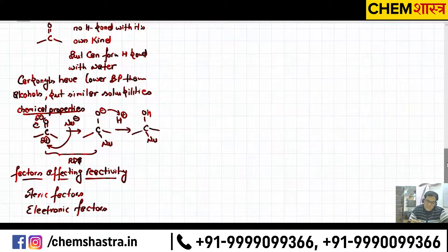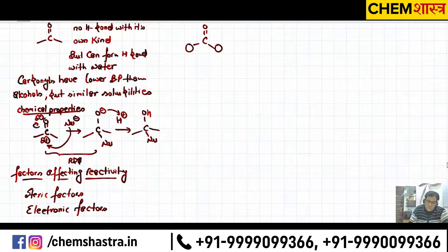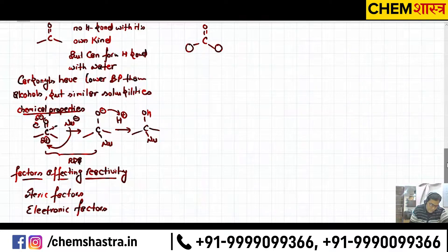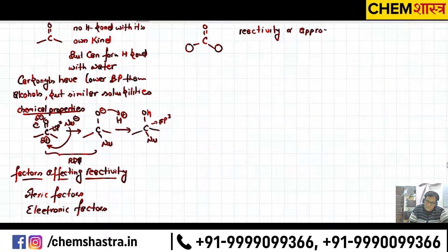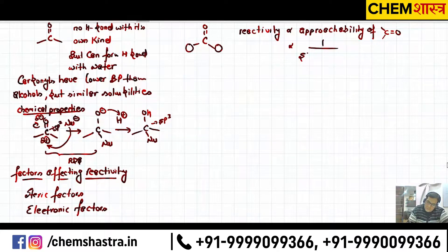Steric factors: the groups around the carbonyl — around C=O — should be small in size. If they are small, the approachability is easier. We are taking an SP2 hybridized carbon and converting it to SP3 — from trigonal planar to tetrahedral. Steric factors are important; less bulk is needed for approachability. Hence reactivity is directly proportional to the approachability of C=O, and inversely proportional to steric hindrance around C=O.